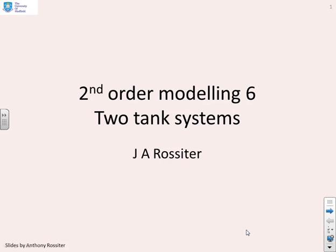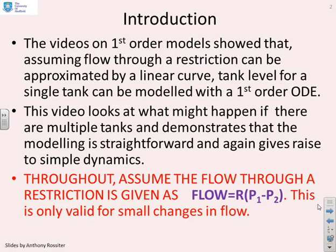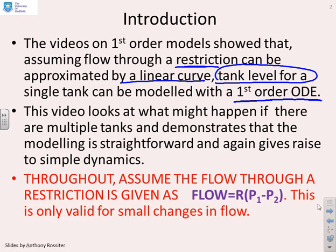The sixth video on second-order modeling looks at systems with two tanks. Earlier videos looked at tank systems with just a single tank, and what we showed is that if you assumed the flow through the outlet or restrictions could be approximated by a linear curve, then you ended up with a first-order differential equation. What we want to do now is ask what happens if there are multiple tanks, and in particular we're going to look at two tanks and demonstrate that the modeling is still straightforward and gives rise to simple dynamics.